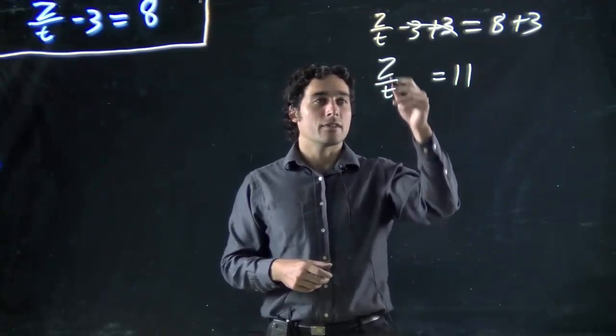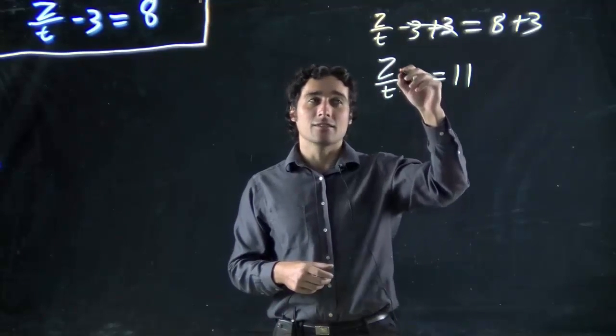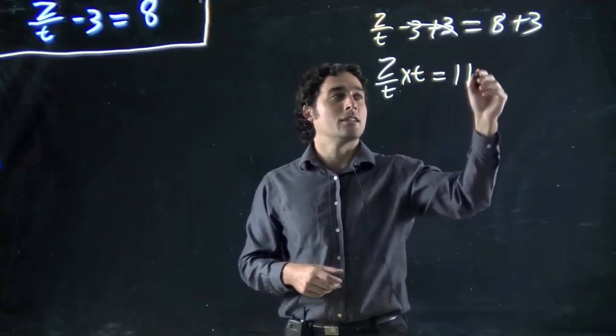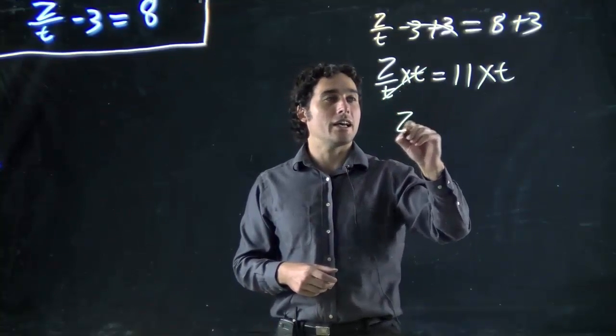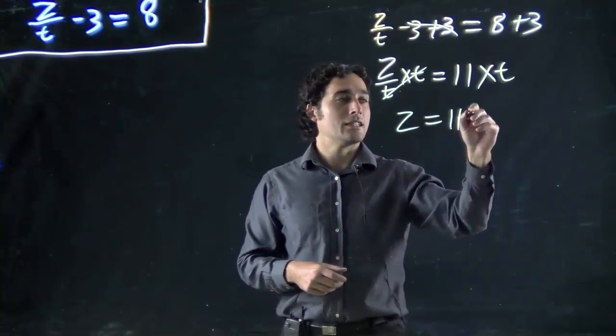Now we want to get rid of the t. The z is being divided by t so multiply by t, again both sides and these will cancel. We have z equals 11t.